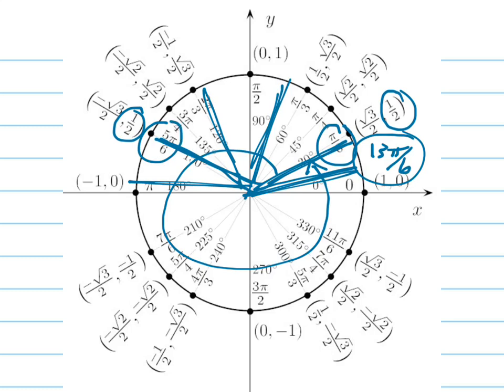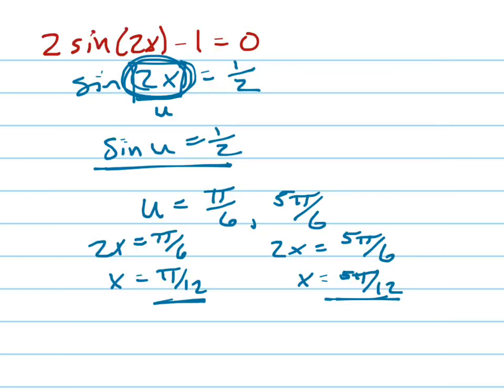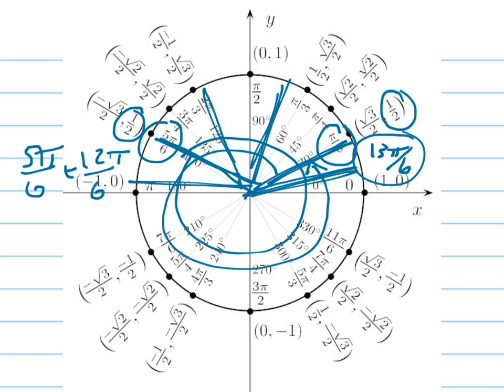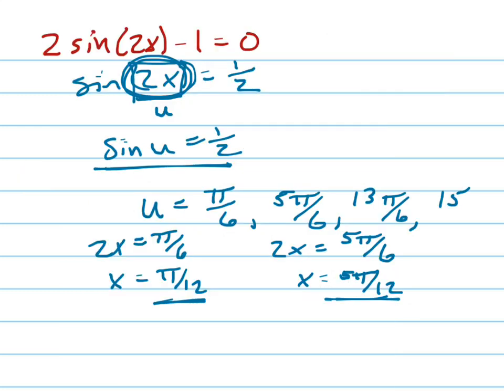Same with this one. 5 pi over 6, if I go around another time, in other words add 5 pi over 6 plus 12 pi over 6, is 17 pi over 6. So I'm going to have, I should have put 13 pi over 6 here. And 17 pi over 6.